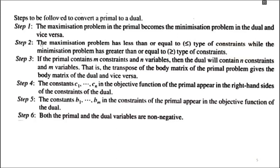Number two: a maximization problem has constraints of the less-than-or-equal-to type. If not, then you can multiply by minus one. A minimization problem has constraints of the greater-than-or-equal-to type. If the problem is maximization, then the dual will have minimization, and the constraints are less-than-or-equal-to. If you have minimization, then the dual constraints will be greater-than-or-equal-to.